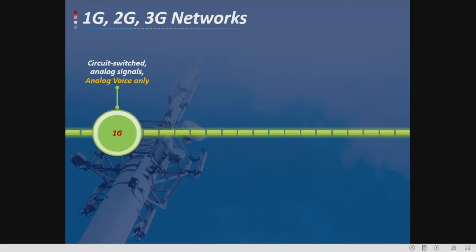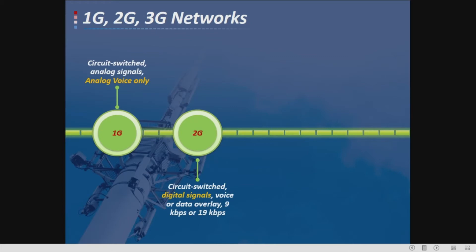For the second generation, it uses circuit-switched digital transmission — voice or data — at around 9 kilobits per second or 19 kilobits per second. The 2G system was released in 1990 and used in GSM.